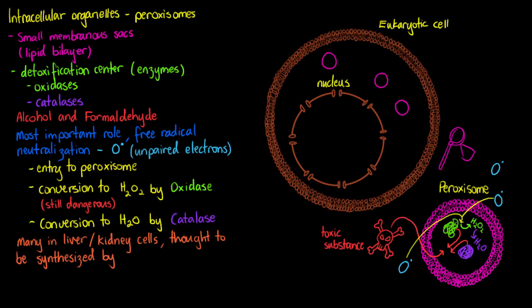So let's just review quickly everything we know about the peroxisomes now. We know that they're small membranous sacs within the cell and they're smaller than our lysosomes. They have their own lipid bilayer and they're the detoxification centers. So we're going to find enzymes in there such as oxidases and catalases that will be breaking down toxic substances and neutralizing free radicals.